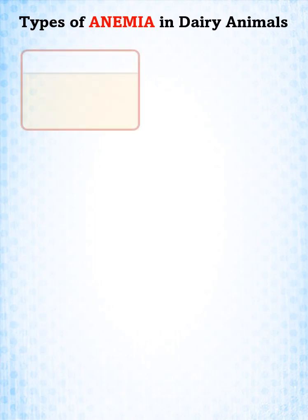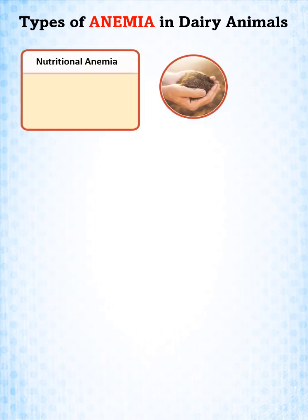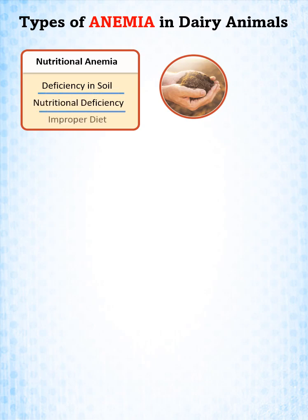Types of anemia in dairy animals. Nutritional anemia — caused by deficiency of minerals in soil, nutritional deficiency, and improper diet.